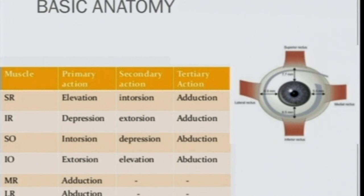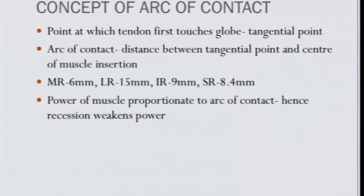Medial rectus has only adduction and lateral rectus only abduction. The concept of arc of contact: in the eye globe, the arc of contact is the distance between the tangential point and the center of the muscle insertion. Medial rectus is only 6mm, lateral rectus 15mm, inferior rectus 9mm, and superior rectus 8.4mm. The power of the muscle is proportionate to the arc of contact — hence recession weakens and resection strengthens the muscle.